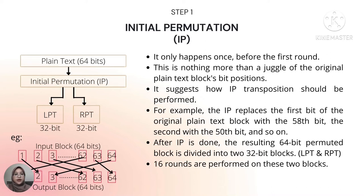Always remember: after IP is completed, the 16 rounds are performed, then step two begins. The example diagram demonstrates how initial permutation happens — the input block of 64-bit positions are swapped, and the output is then divided into LPT and RPT.